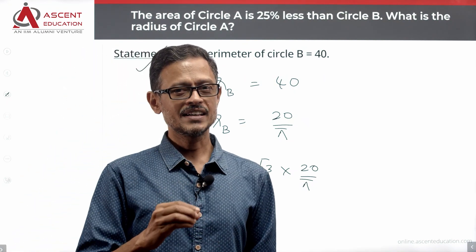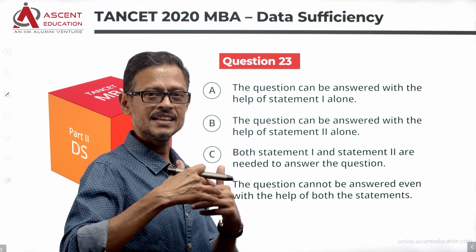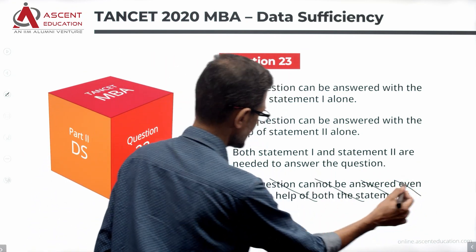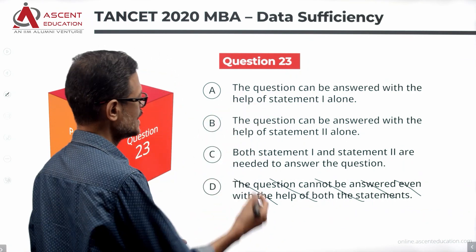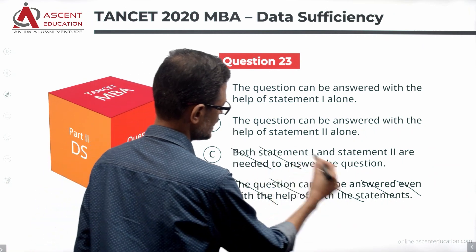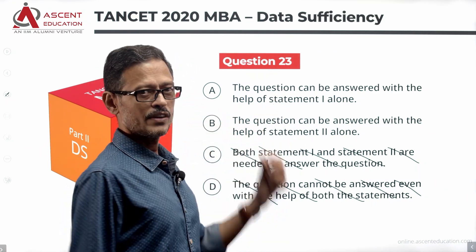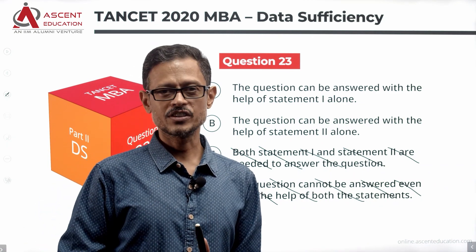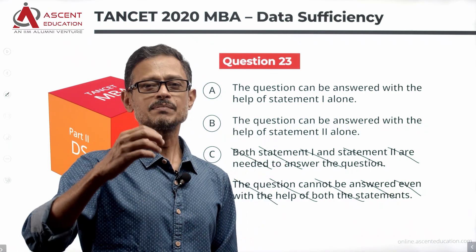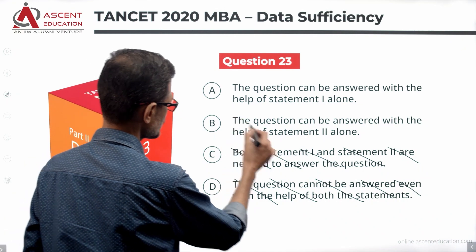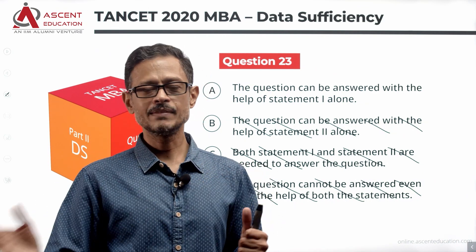Statement 1 alone is sufficient. When statement 1 alone is sufficient, we can eliminate answer options B, C, and D. Answer option D means we cannot answer even with both statements — that's eliminated. Answer option A is the candidate since statement 1 alone is sufficient.